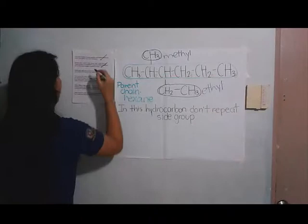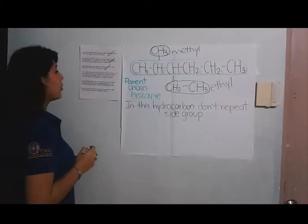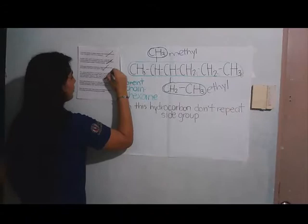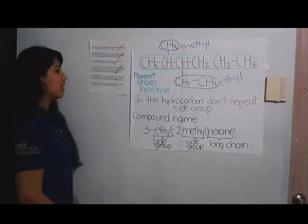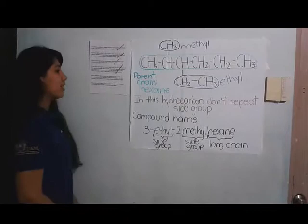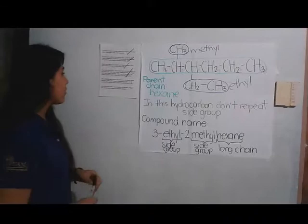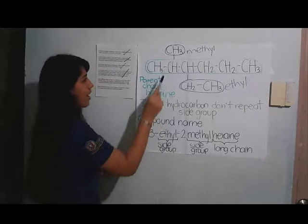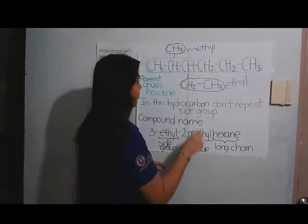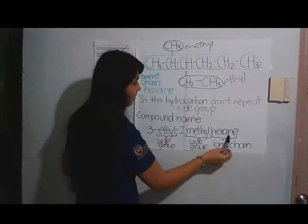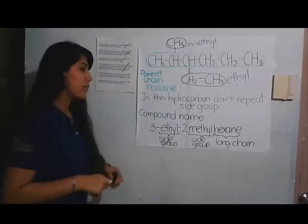The fourth step: if the same alkyl group occurs more than once as a branch, use a prefix before its name to indicate how many times it appears. In this hydrocarbon, no substituent group is repeated, so this rule is complete. Applying the last two rules — alphabetical order and hyphen/comma punctuation — the complete name becomes 3-ethyl-2-methylhexane, because ethyl comes before methyl alphabetically and hexane is the longest chain.